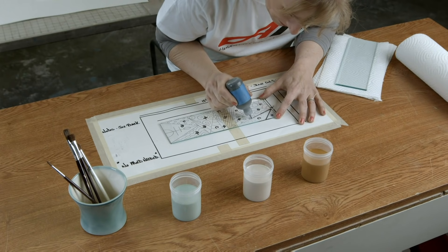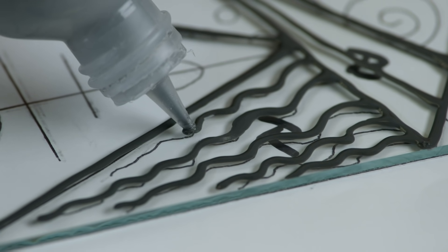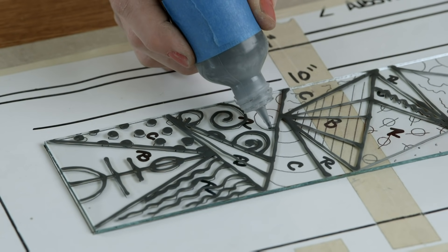Using liquefied dark enamel, lines are traced on the glass, creating thick lines that mimic the appearance of lead veins in stained glass.